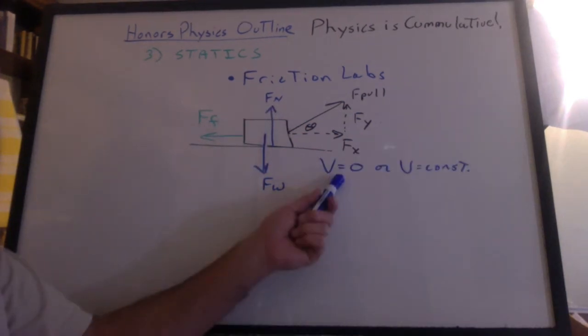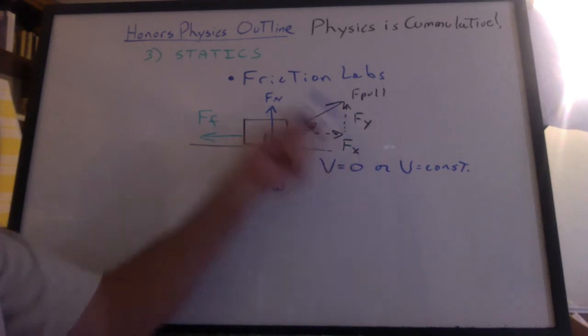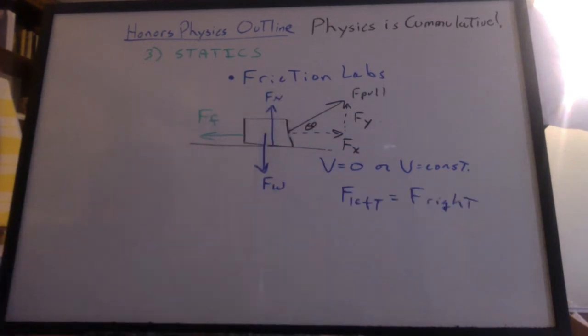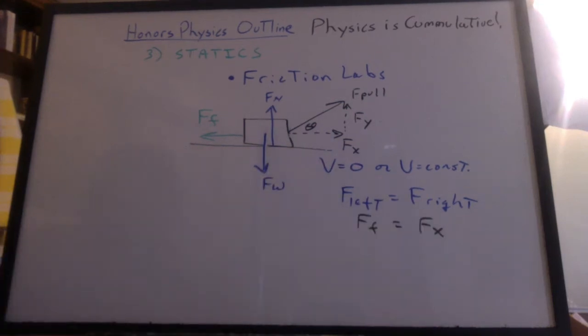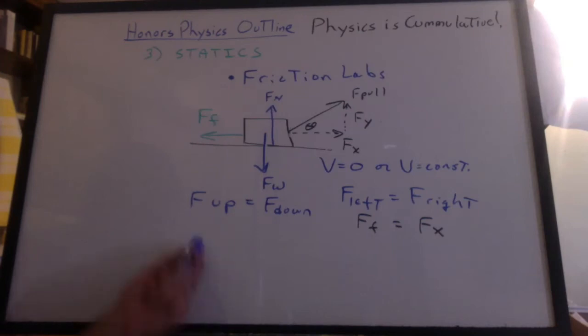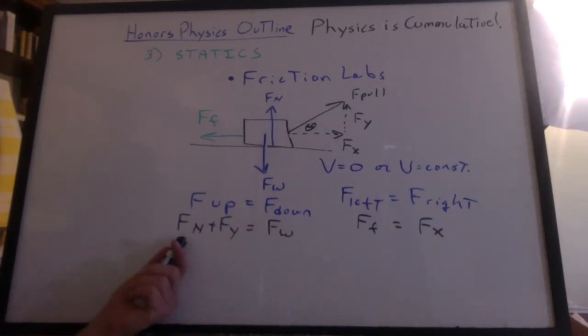We would label the weight and the normal force. And we said if the velocity was 0 or the velocity was constant, we could make assumptions about these forces. Forces going to the left equal the forces going to the right. So the x component of the pulling force equals the force of friction. And we could say the forces up equal the forces down, which would mean the normal force plus the y component would be equal to the weight.